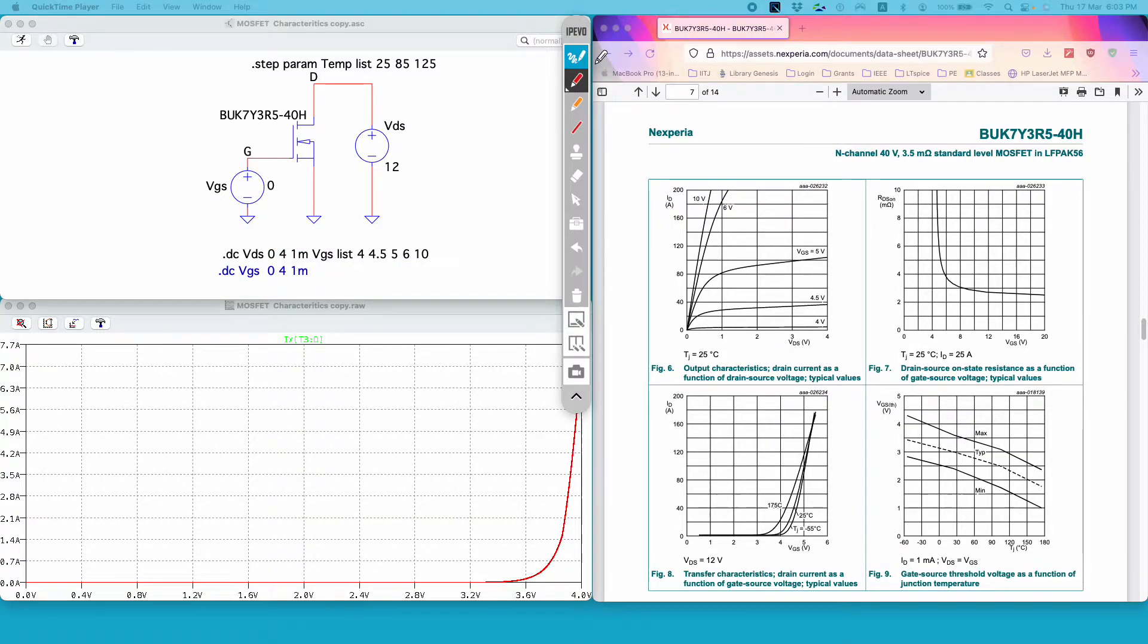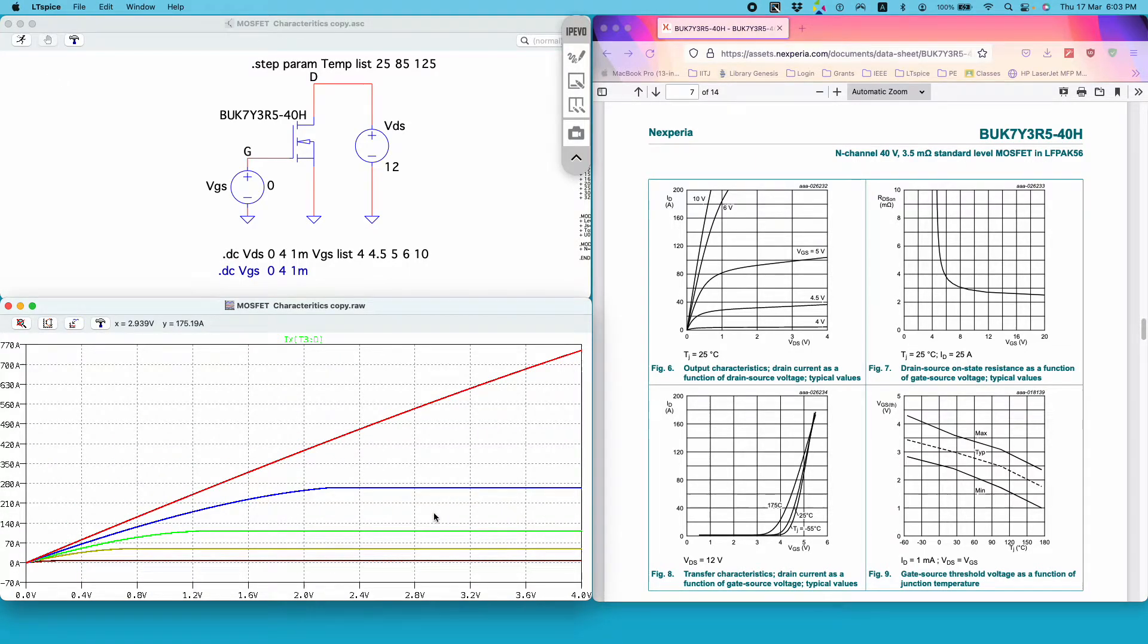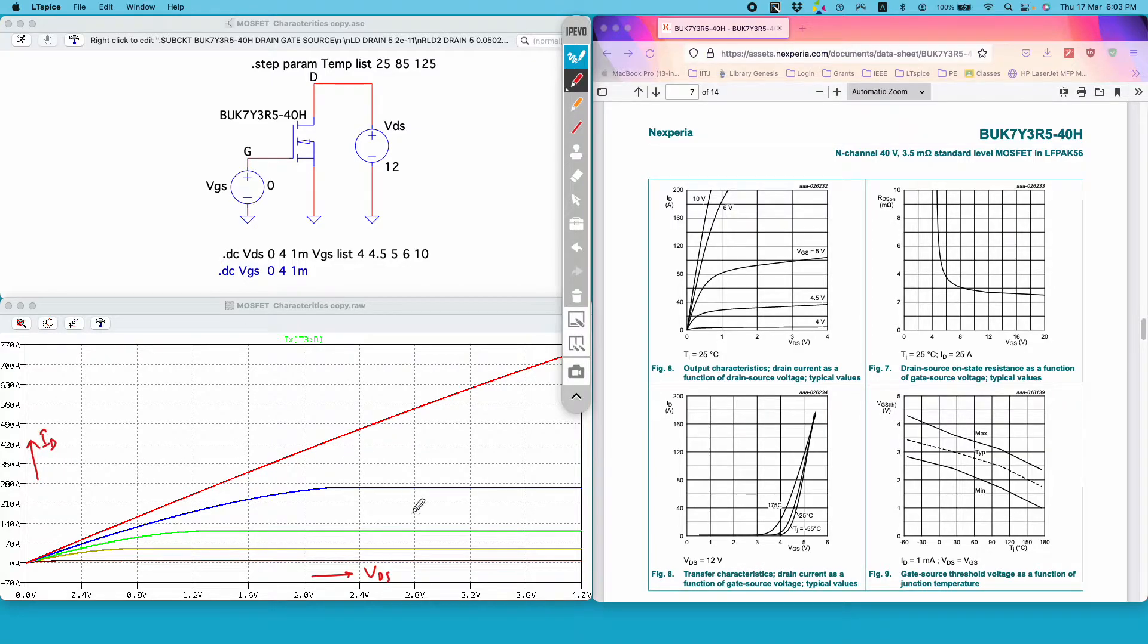Now if I run the simulation I get this curve. So on the x-axis I have VDS and on the y-axis I have the drain current and I have five curves for five different values of VGS.